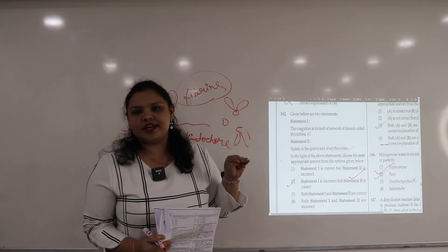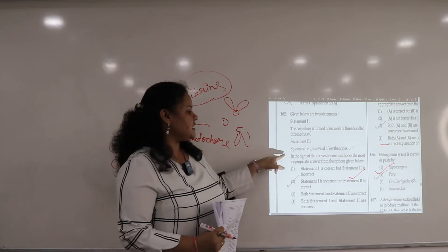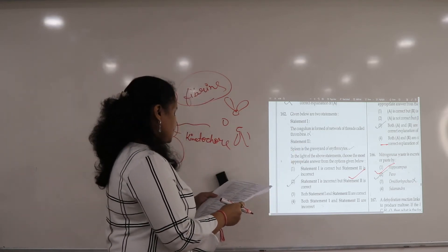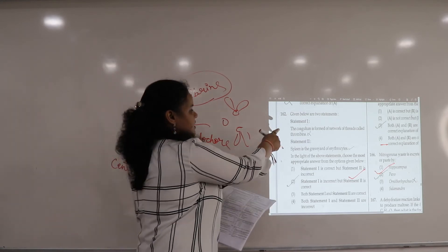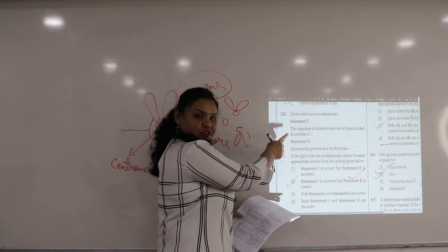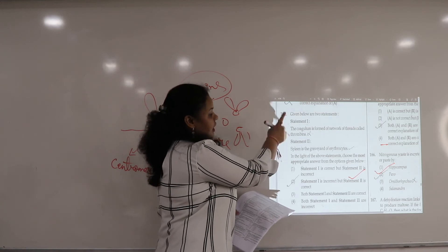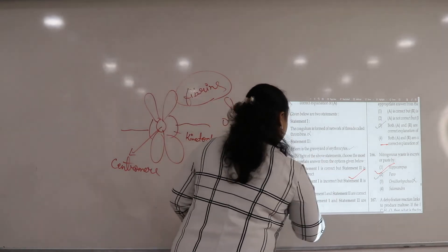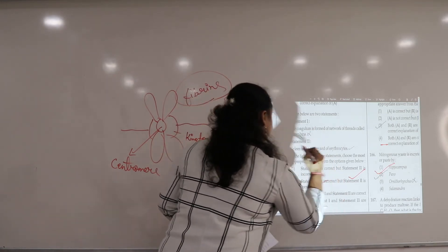Statement 2: the spleen is the graveyard of RBCs or erythrocytes. So the right answer for 162 will be: the statement 1 is incorrect. The coagulum is not formed of fibrins in this statement. So statement 1 is incorrect, while statement 2 is correct. Answer is second.